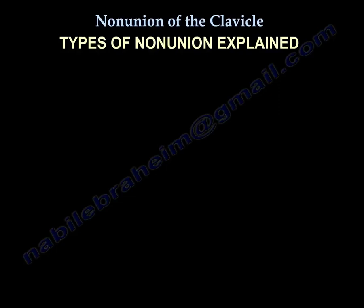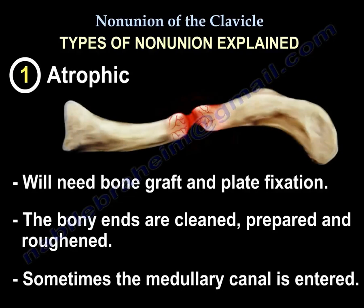Type one: atrophic nonunion. You will need bone graft and plate fixation. The bone ends are cleaned, prepared, roughened, and sometimes the medullary canal is entered.